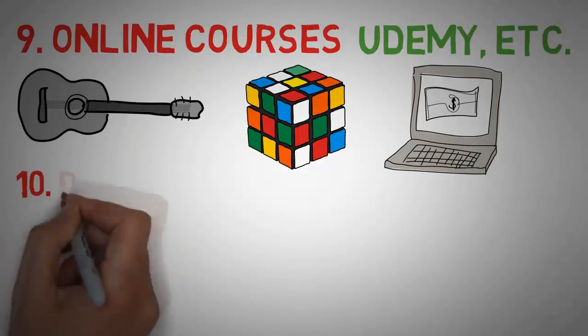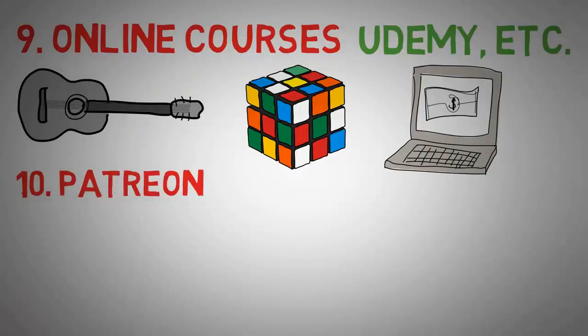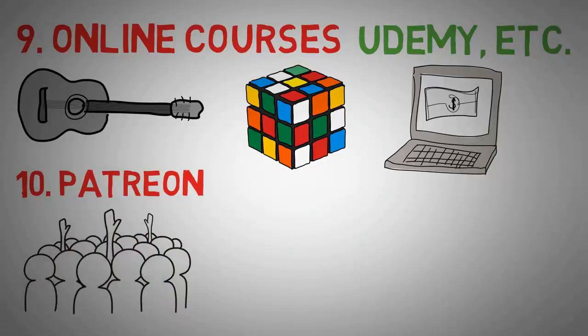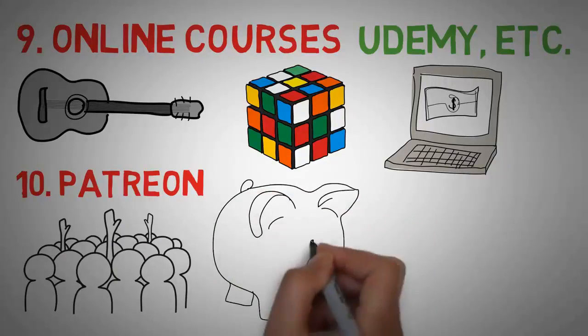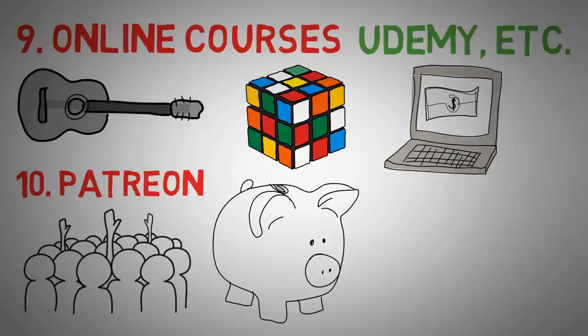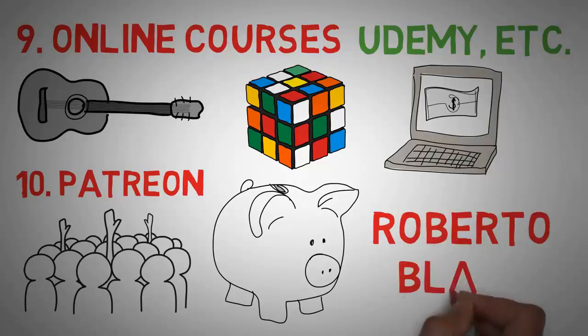Now the last one is Patreon, and Patreon works best if your content isn't very monetizable. But you have a large or a very dedicated small fanbase that is willing to give you money so that you can keep creating the content that you are creating. Also if you want another 10 ideas, check out this video by Roberto Blake about Passive Income Online.